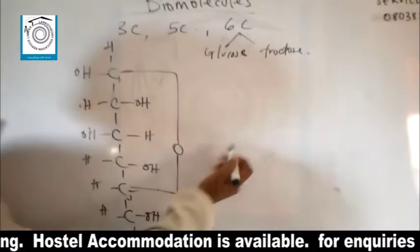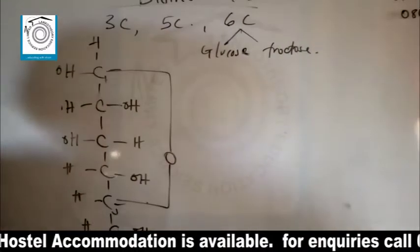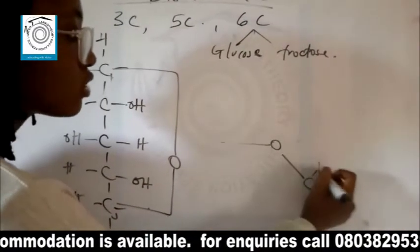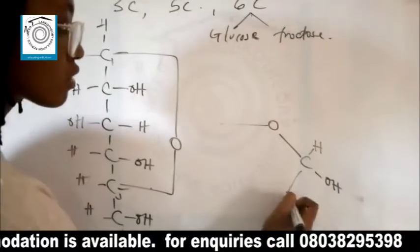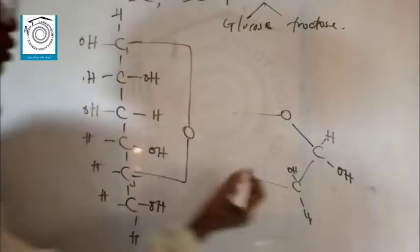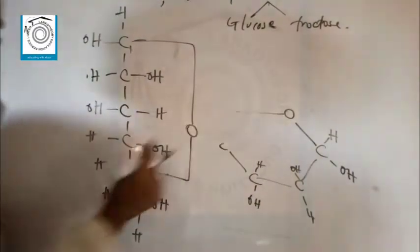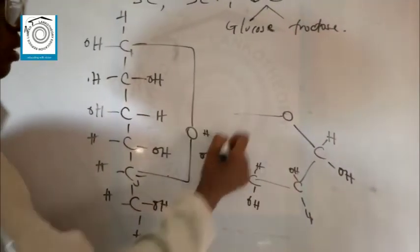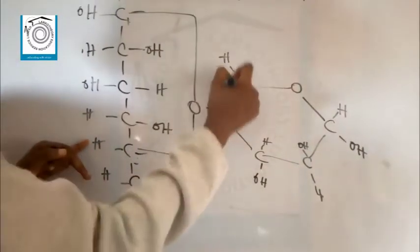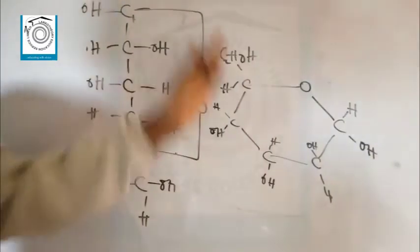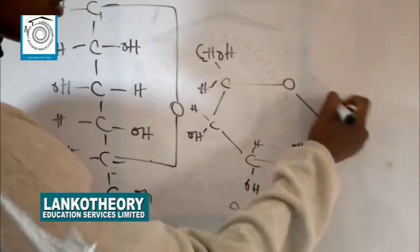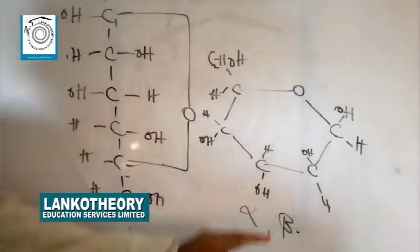The cyclic structure is in the form of a hexagon. You have an oxygen in the ring; the first carbon atom carries hydrogen and OH; the second carries OH and H; the third carries H and OH; the sixth carries H and OH; and the last position carries hydrogen and CH2OH. When the OH on carbon 1 is down below, you have the alpha structure; when it comes up, you have the beta structure.